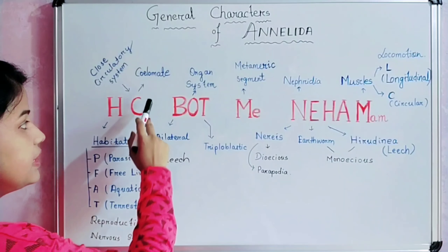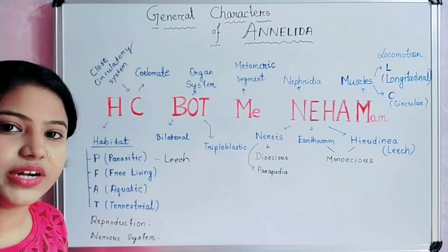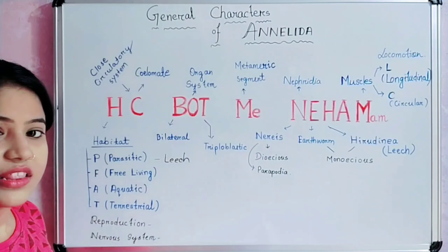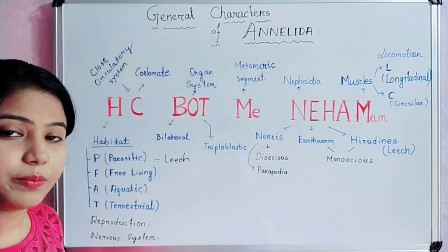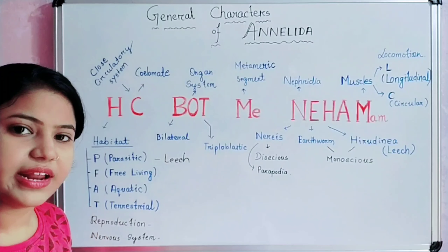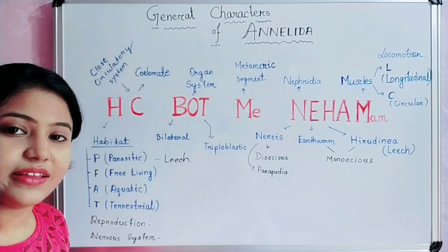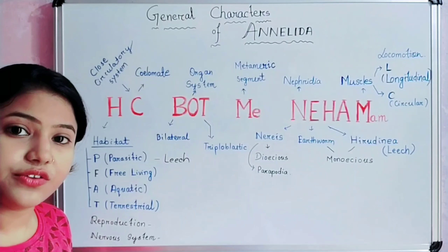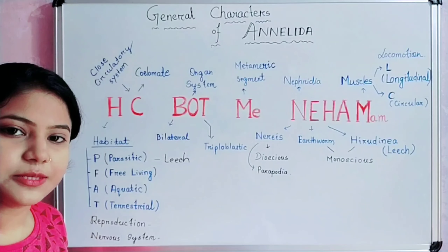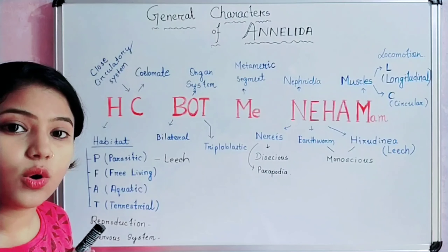C also has another meaning: Coelomate. This means the organisms of Annelida have a body cavity. Coelom means cavity, and coelomate means the organisms possess a true coelom. Before Annelida, there are four phyla: Protozoa, Porifera, Coelenterata, and Platyhelminthes. The first three phyla — Protozoa, Porifera, and Coelenterata — have no body cavity. They are acoelomate, meaning no body cavity.